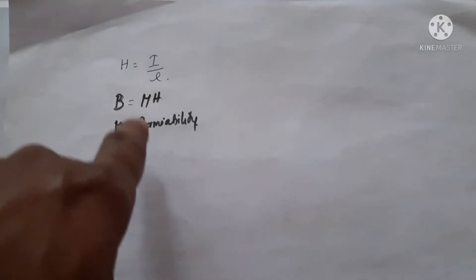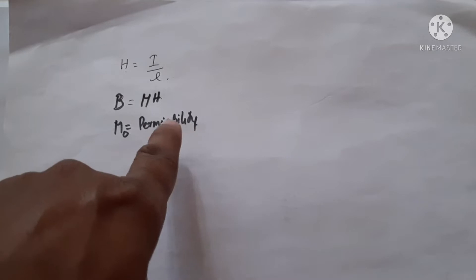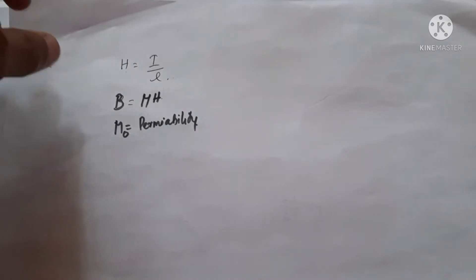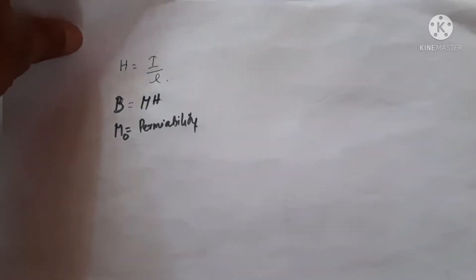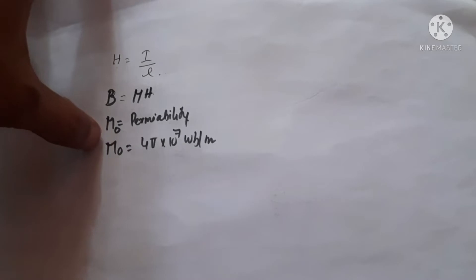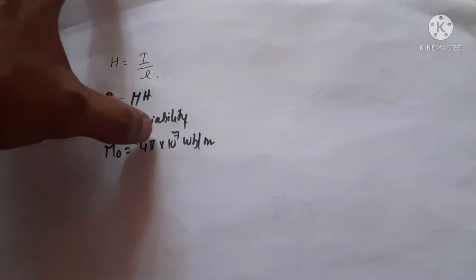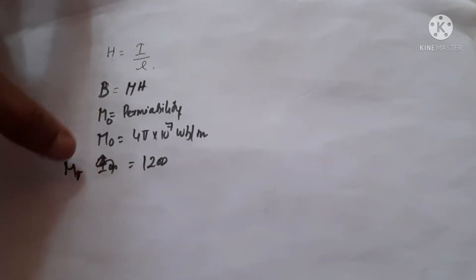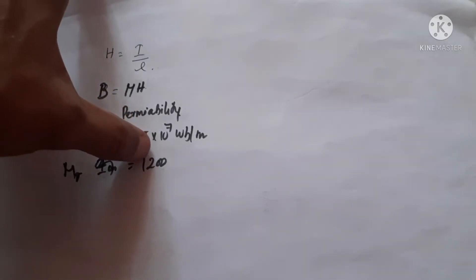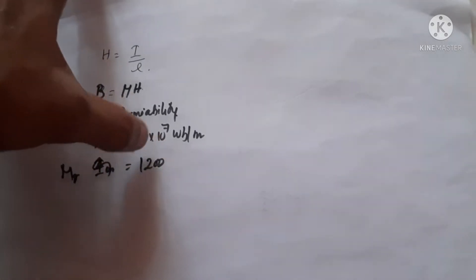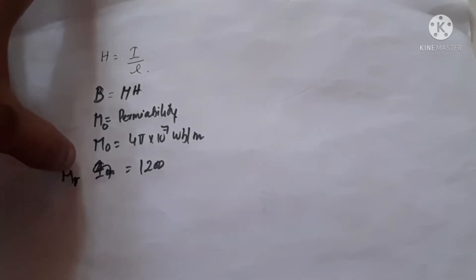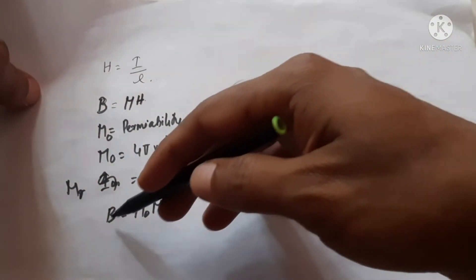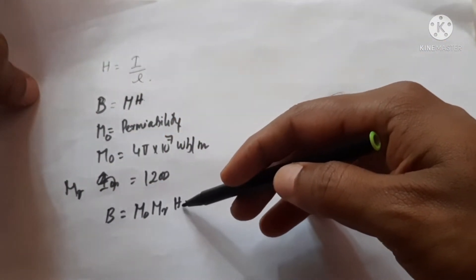There is another term: B is equal to mu times H, where mu zero is the permeability of a material, describing how much it allows the magnetic flux to pass through it. If air is the material, its permeability is called mu zero, and it equals 4π × 10⁻⁷ henry per meter. If you take iron, it has a permeability of around 1200 times that of air, denoted as the relative permeability.